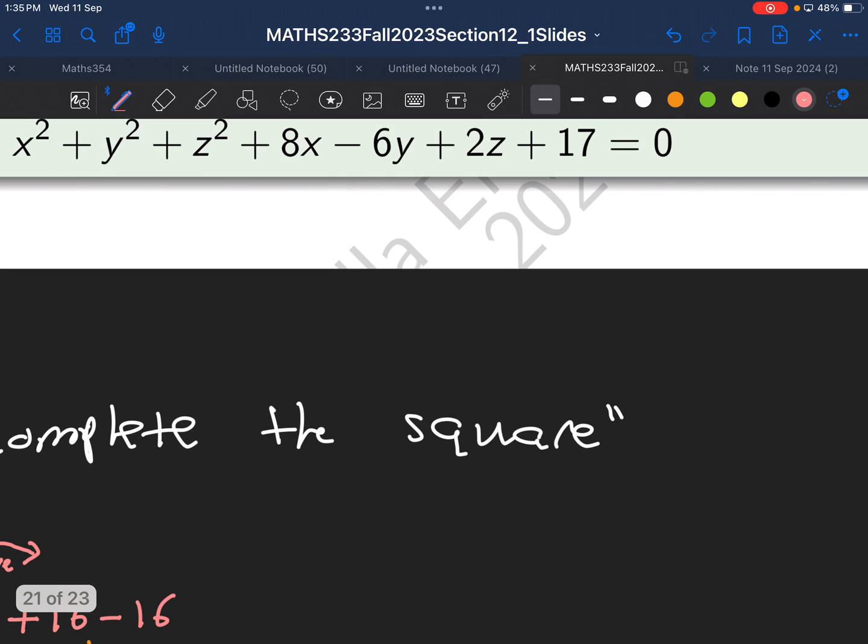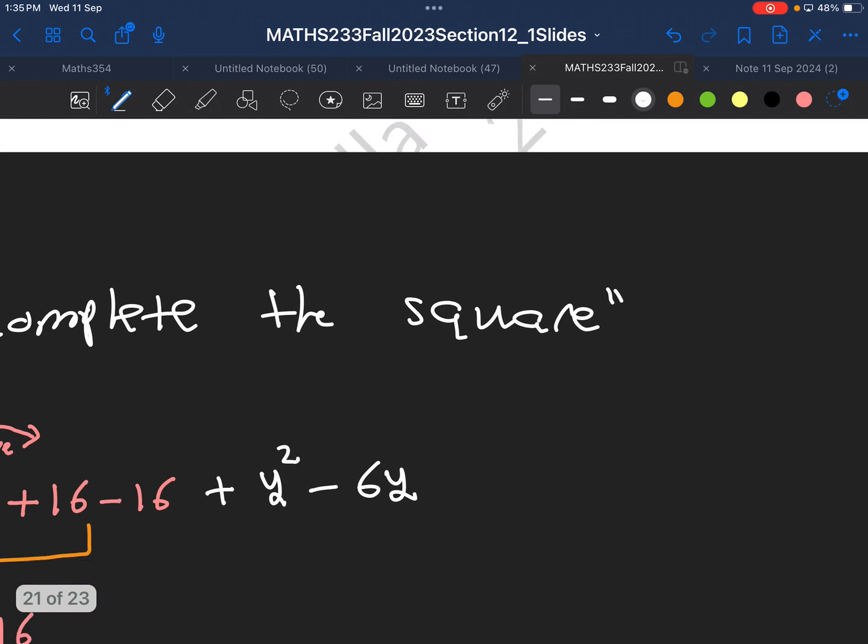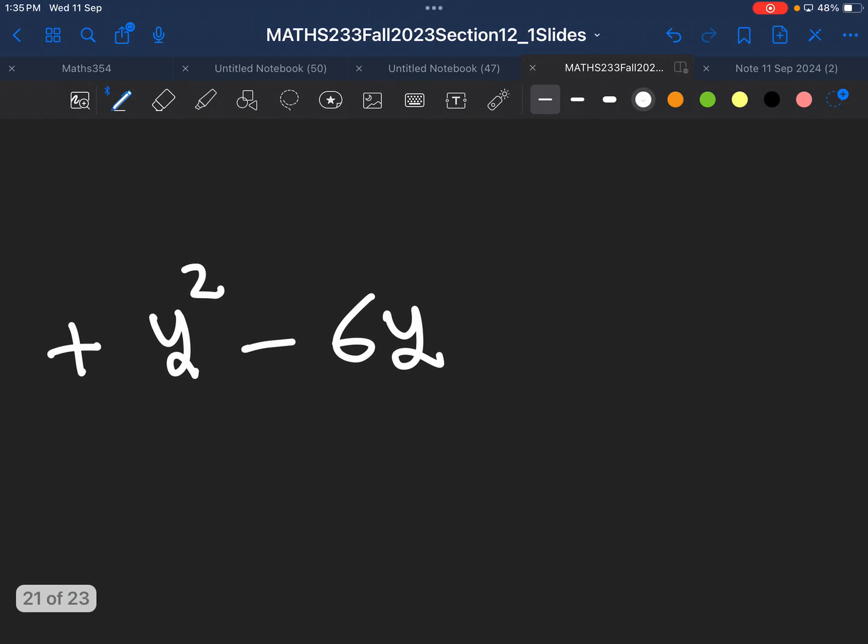Now, for the y's, I have y² - 6y. What we are going to do with this one, we take this number, which is 6. I will divide it by 2. I will get 3. And then I will square it. So 6 divided by 2, 3, if you square it, you will write plus 9. And then you don't want to change the equation. You will subtract 9 again. So plus 9, negative 9, I did nothing.